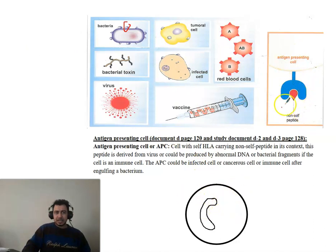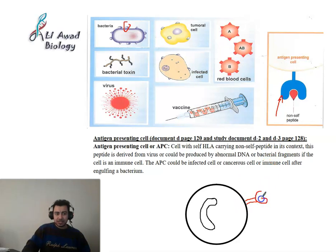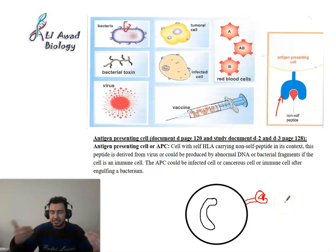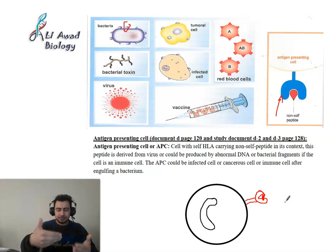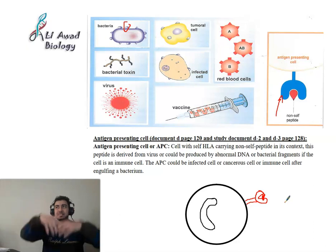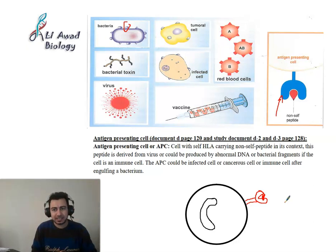An antigen presenting cell is a cell having on its surface self HLA - whether class one or class two - with a non-self peptide in its context. When the peptide changes from self to non-self, the cell becomes self-modified and is called an antigen presenting cell. For example, if infected by a virus, it presents the viral peptide in the context of HLA.